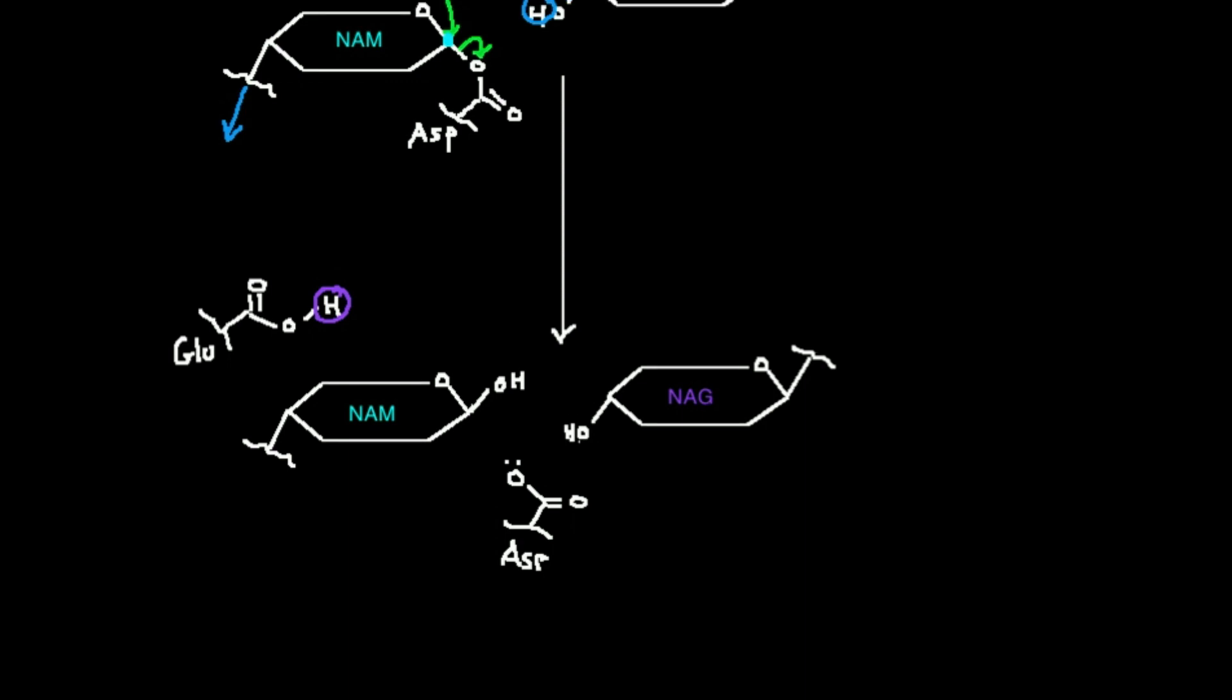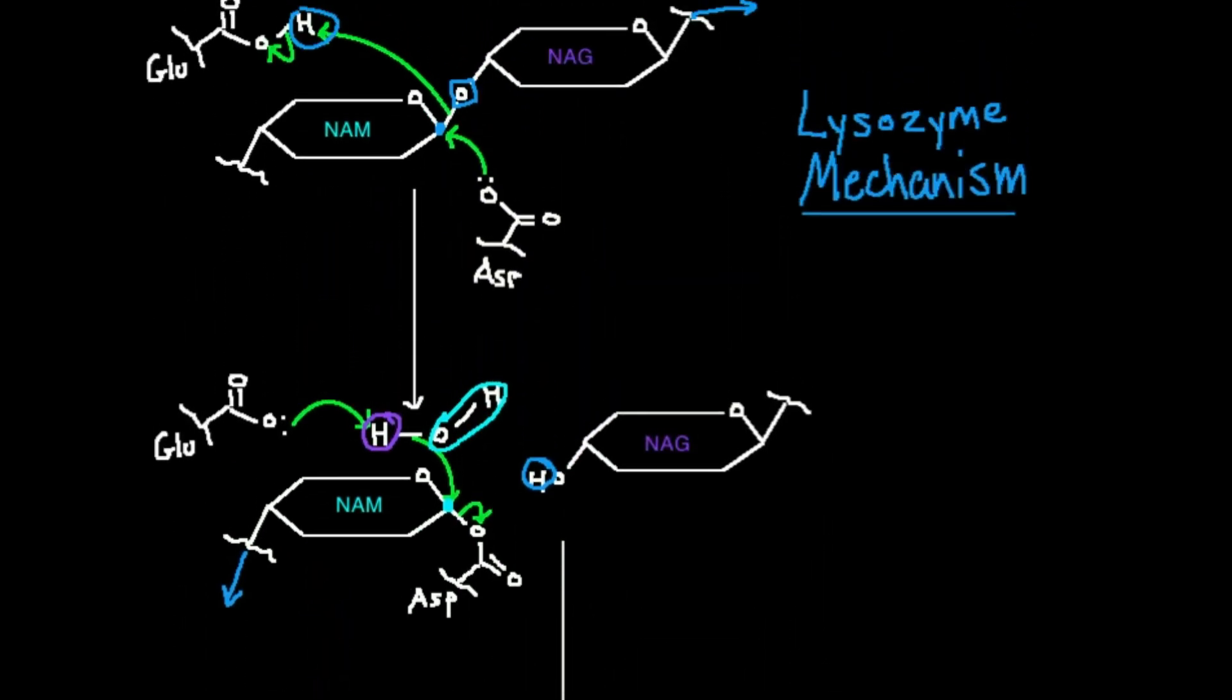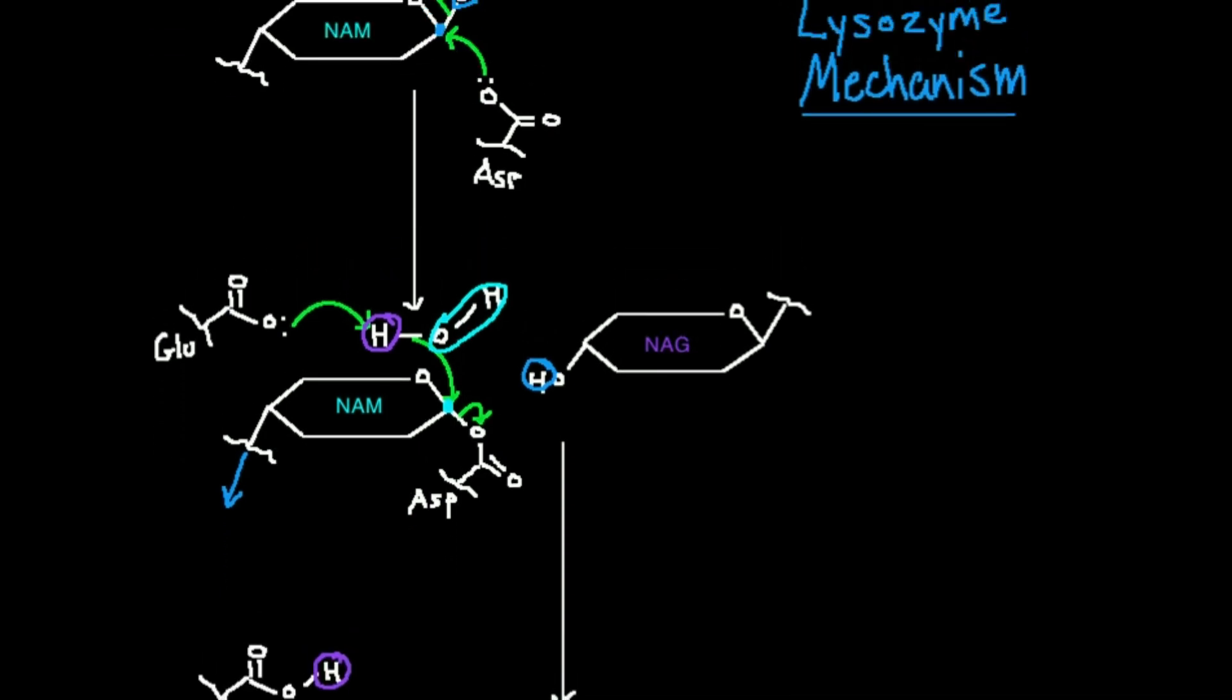Now one thing that's really important, I just want to clarify this because it can be very confusing. Why is it that this glutamic acid has to be on top of the NAM, and this aspartate has to be below? What is the mechanism we're doing? It's an SN2. So if aspartate attacks from the bottom, then NAG is going to leave as the leaving group.